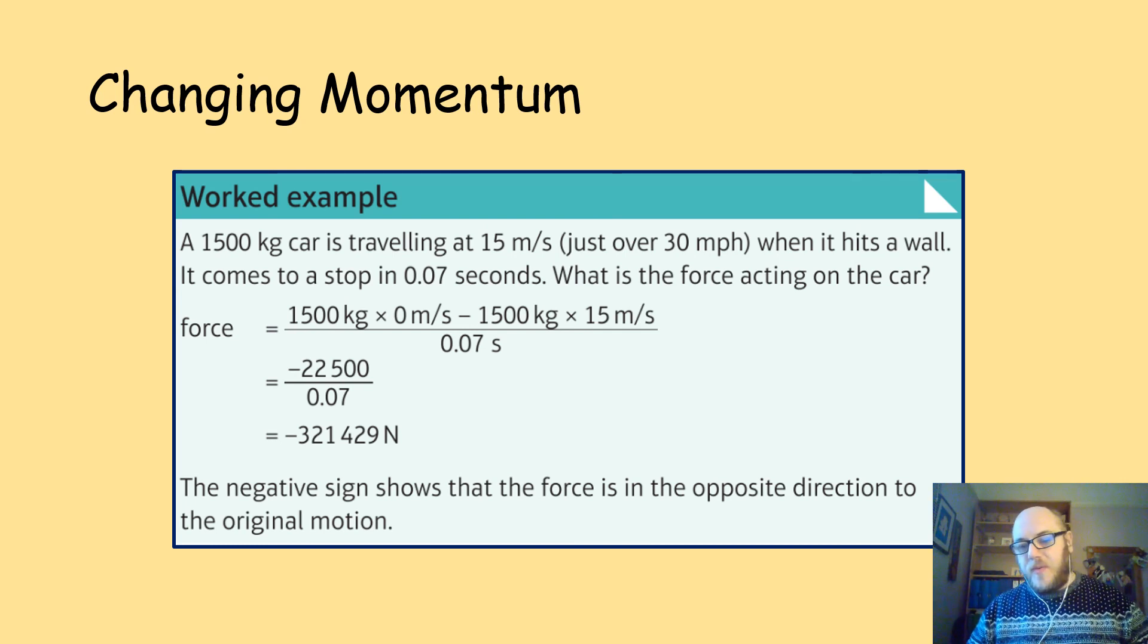That 321,000 newtons, if that force goes through your body as it is, you're not going to survive. But with a seatbelt slowing you down, increasing that time from 0.07 seconds to a bit longer and that airbag coming out and slowing you down even more, that's going to reduce that force. And if you see slow motion footage of crash test dummies, the car has come to a stop and the crash test dummy is still moving. So that means the length of the crash for the person has been increased. And that means the forces have been reduced and the rate of survival is going to go up.